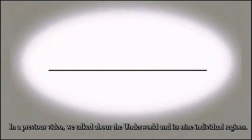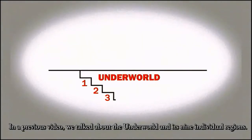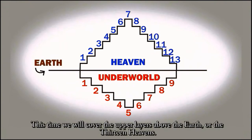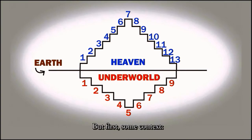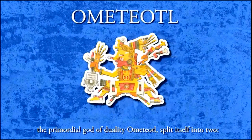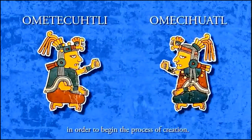In our previous video, we talked about the Underworld and its 9 individual regions. This time we will cover the upper layers above the earth, or the 13 heavens. But first, some context. In Mexica lore, the primordial god of duality, Ometeotl, split itself into two — Ometecutli and Omeciwatl — in order to begin their process of creation.